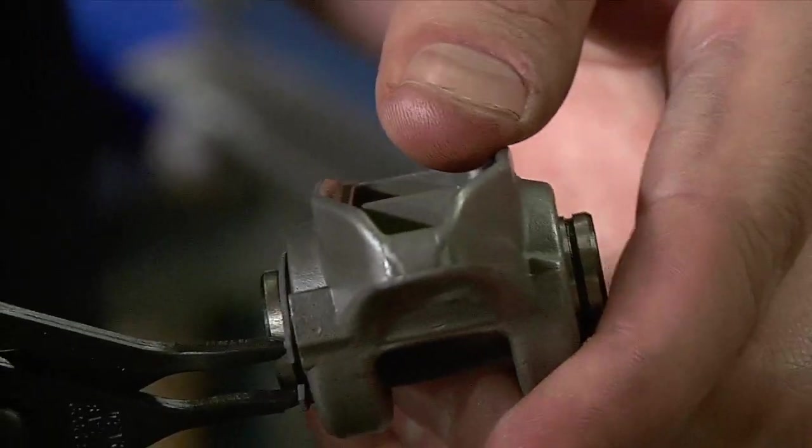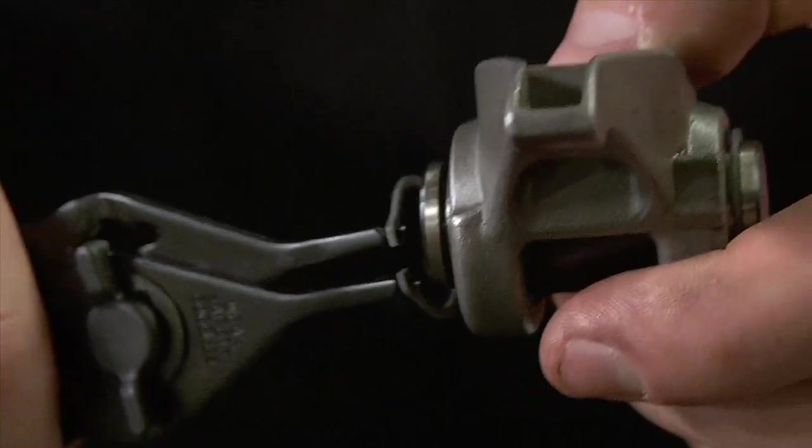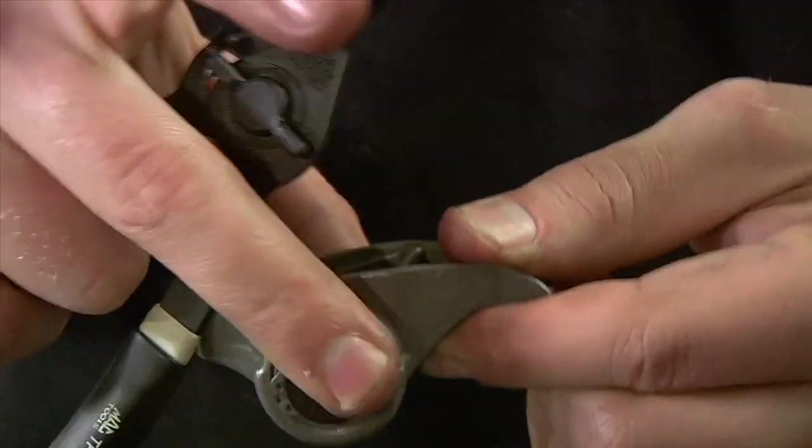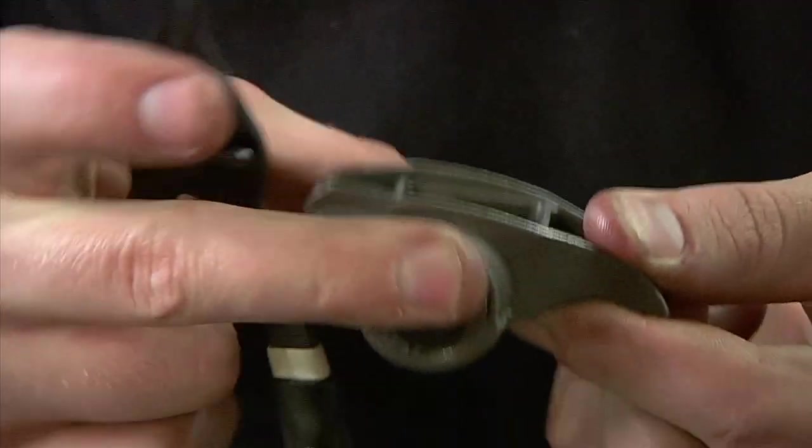Using a set of snap ring pliers install the included snap rings on both sides of the rockers. Now repeat this process on the remaining 15 rocker arms.